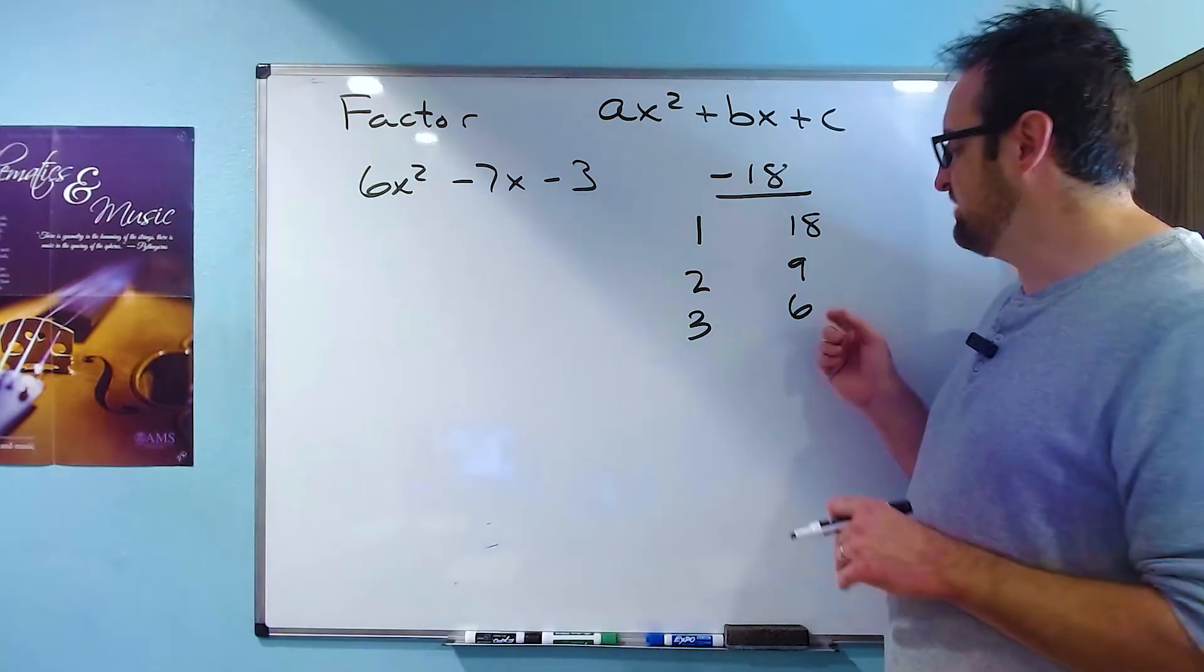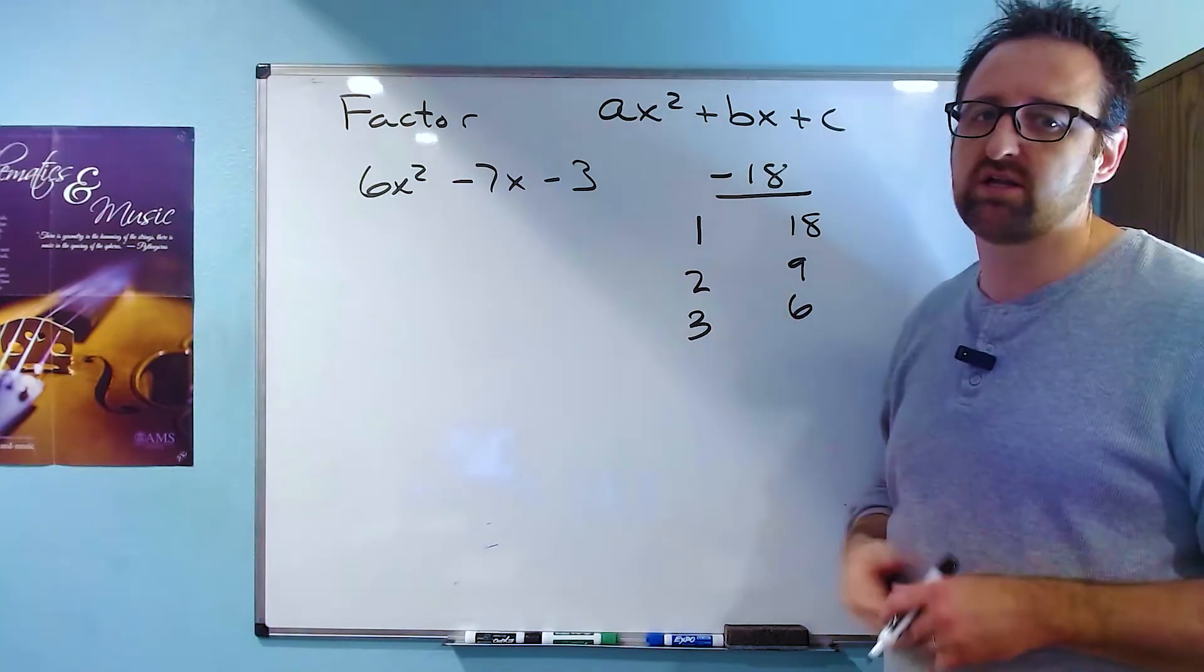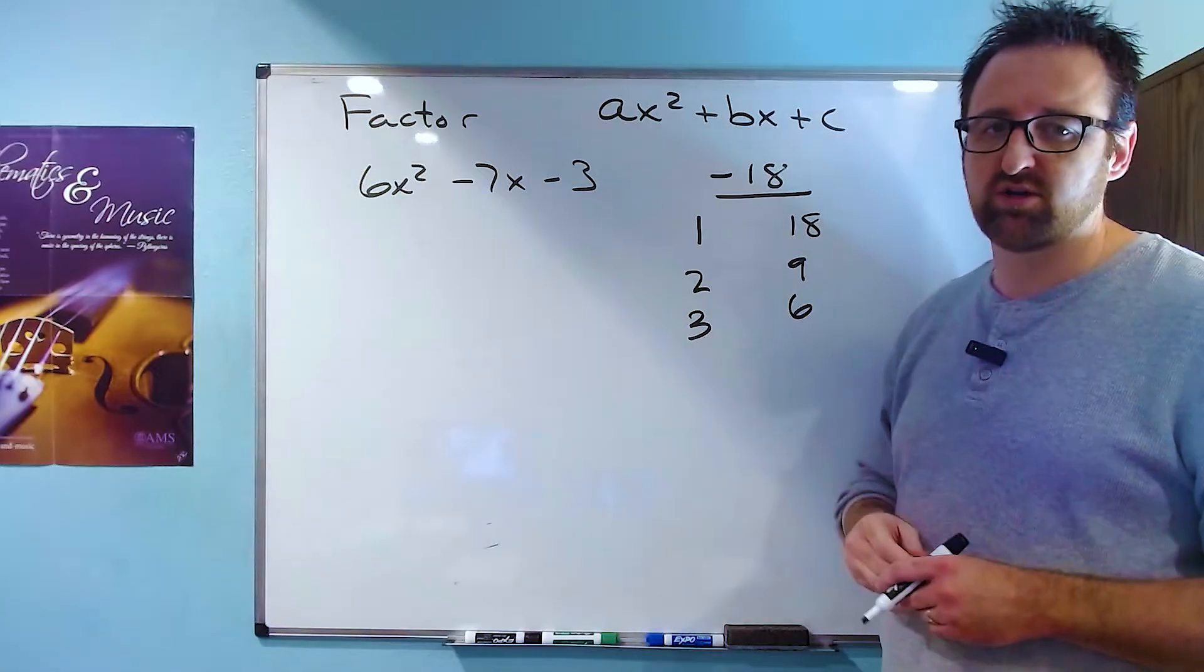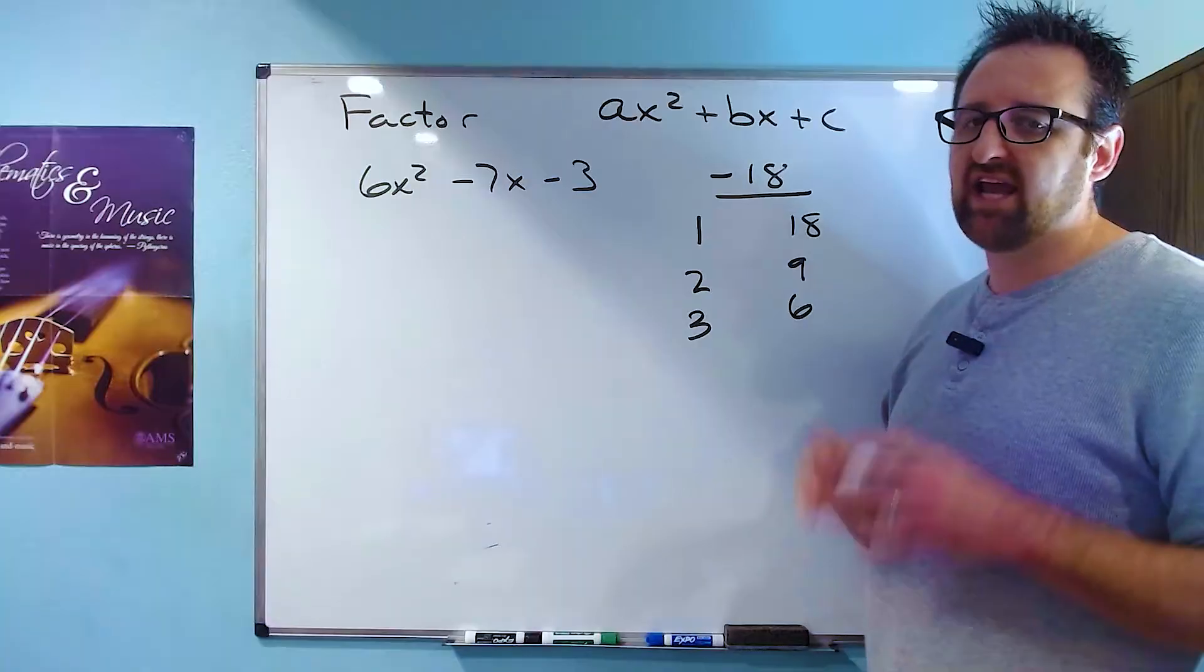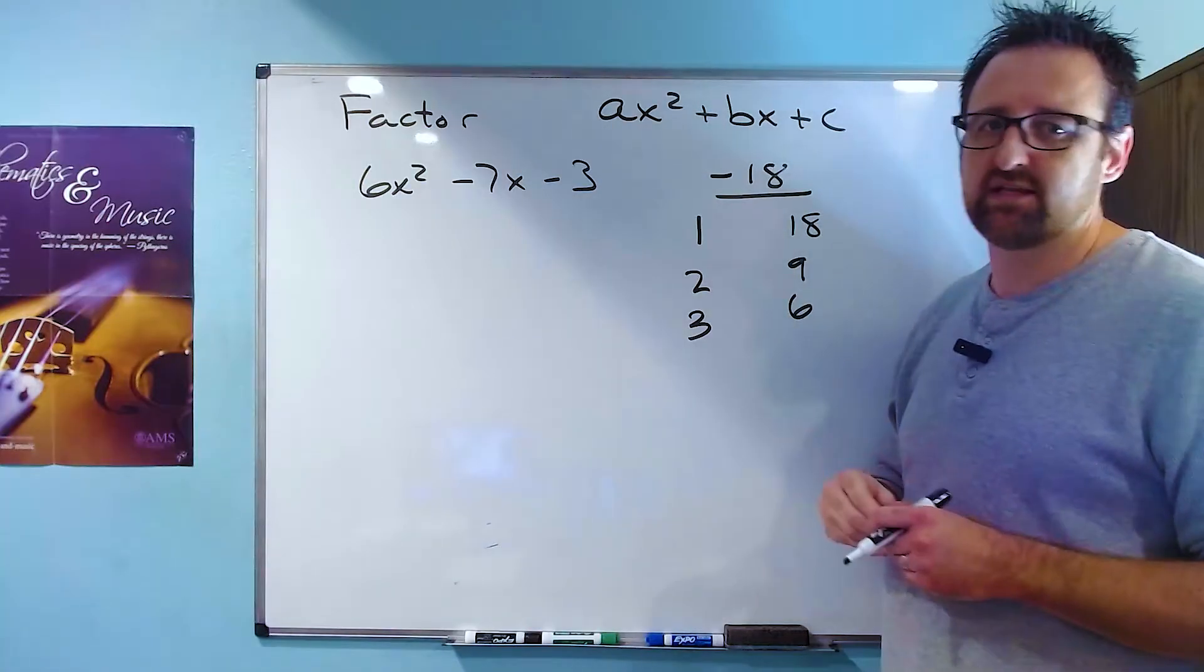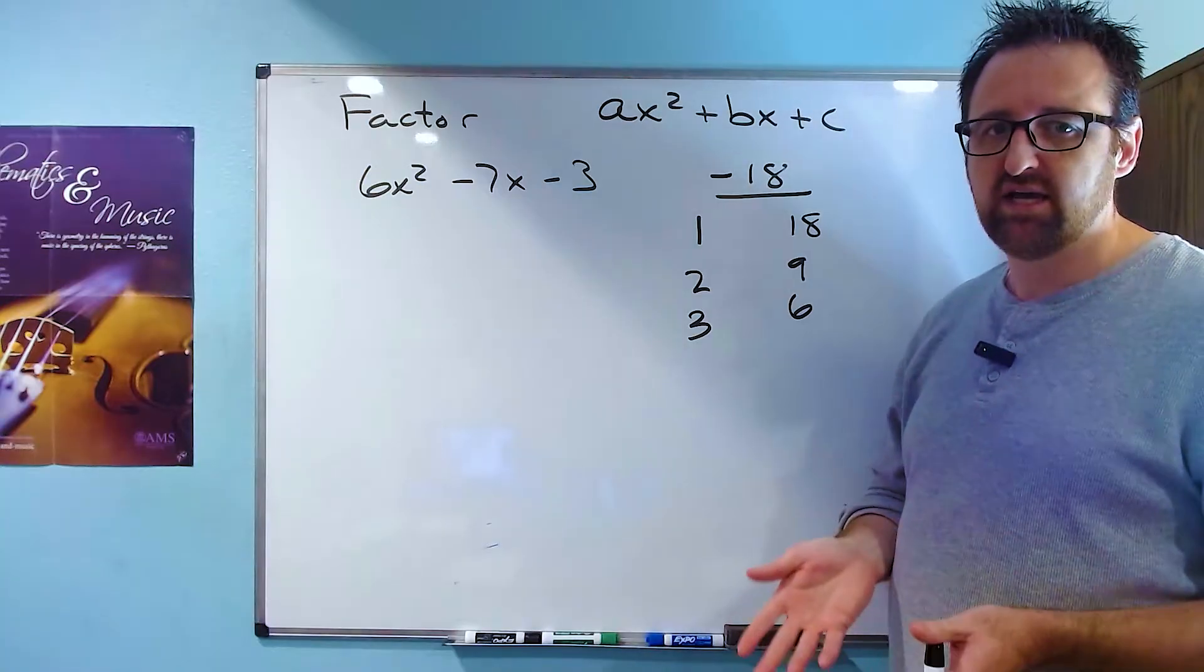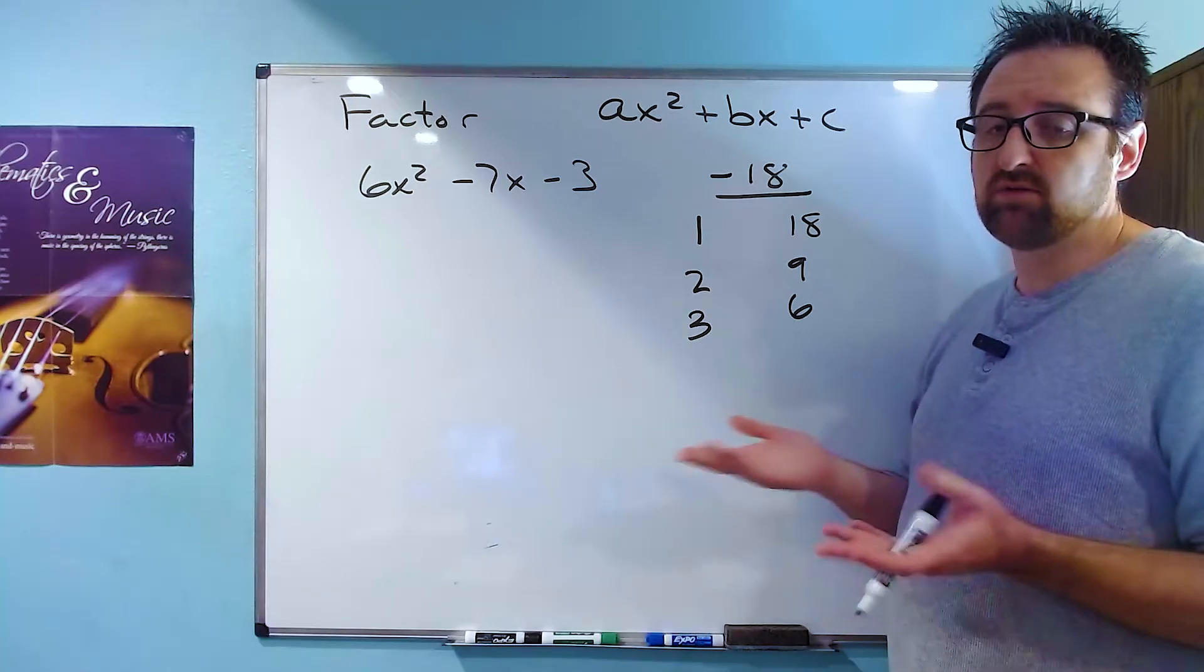As soon as you get to a number that's already on the board, you are done and you have found every possible pair of integer factors of that number. The reason why is actually simple. If a number bigger than six worked, it would have to work with a number smaller than three. And we already checked all of them. So these guys here are the three factor pairs that produce 18.